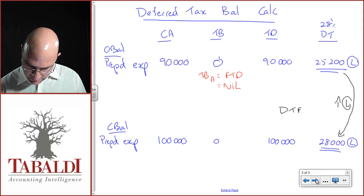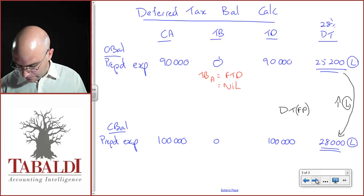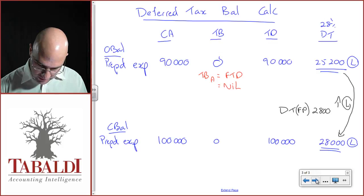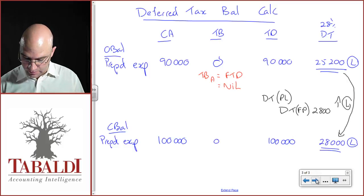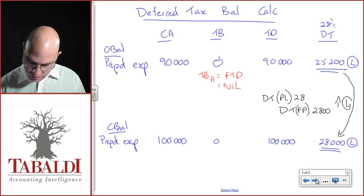Credit deferred tax, financial position, 2,800. The other side of this is going to be a debit deferred tax. I'm going to take it to profit and loss because the underlying difference went through profit and loss. Again, 2,800.